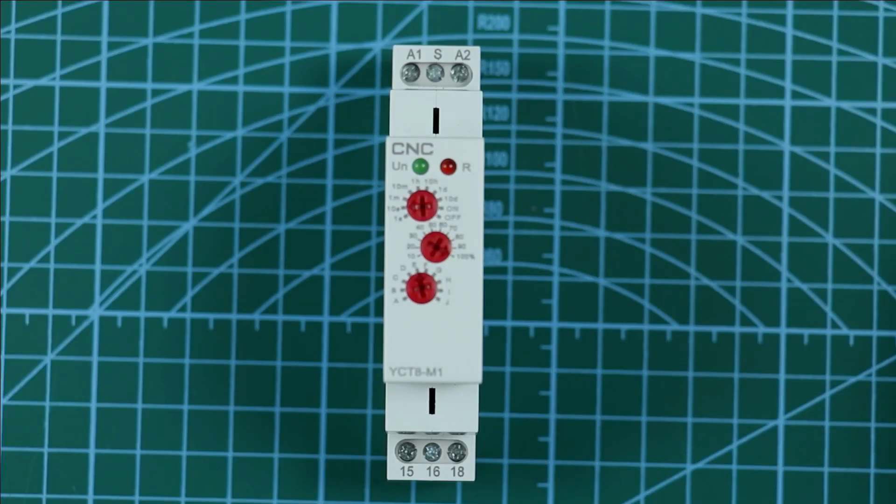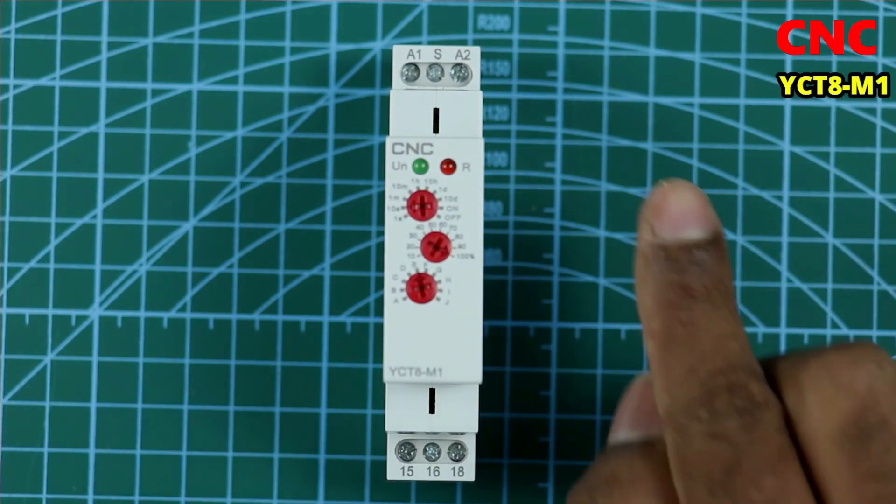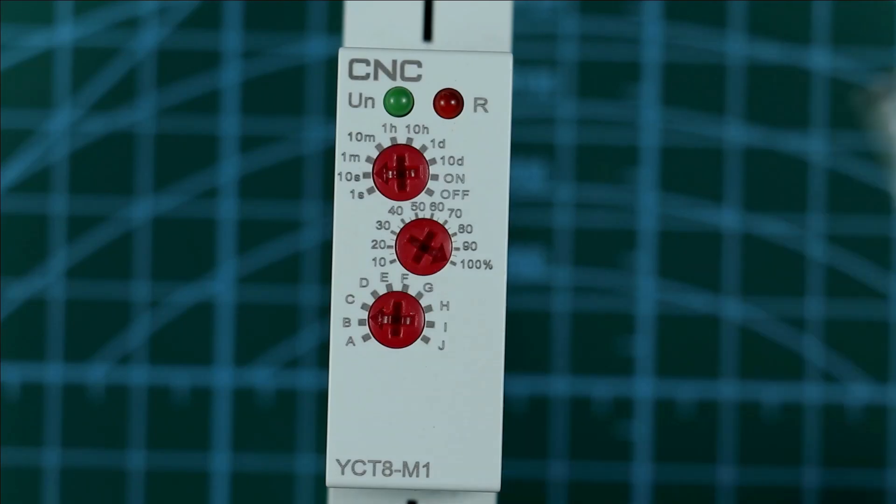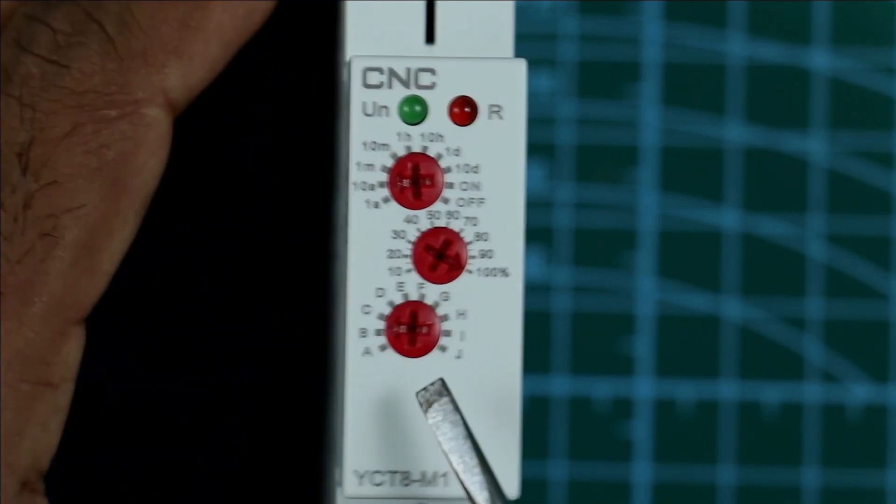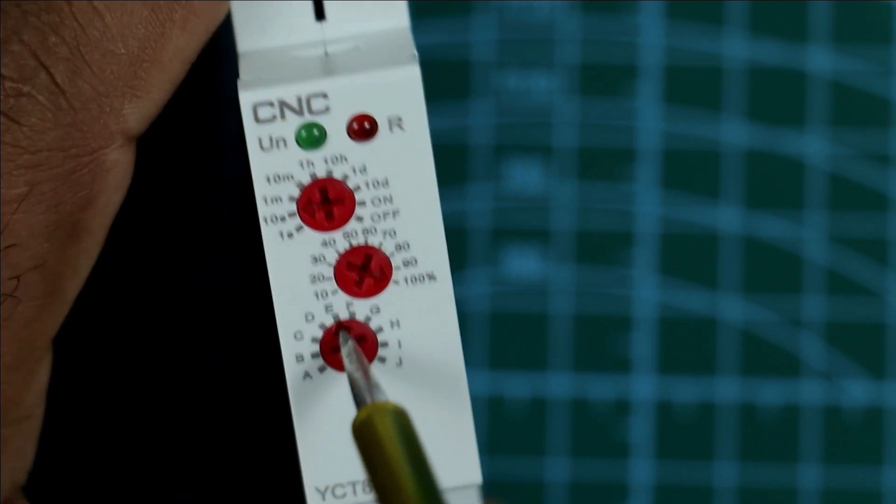The timer which I am going to use in this video is manufactured by CNC company, and you can see the model number here. This timer is known as a multifunctional timer. If you want to use this timer as an on-delay timer, then what you have to do is rotate this knob and select to E position. E means on-delay timer.